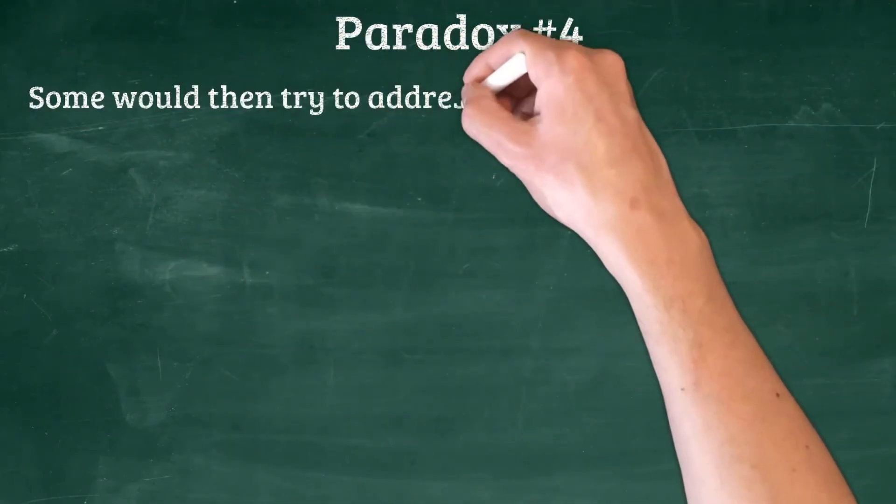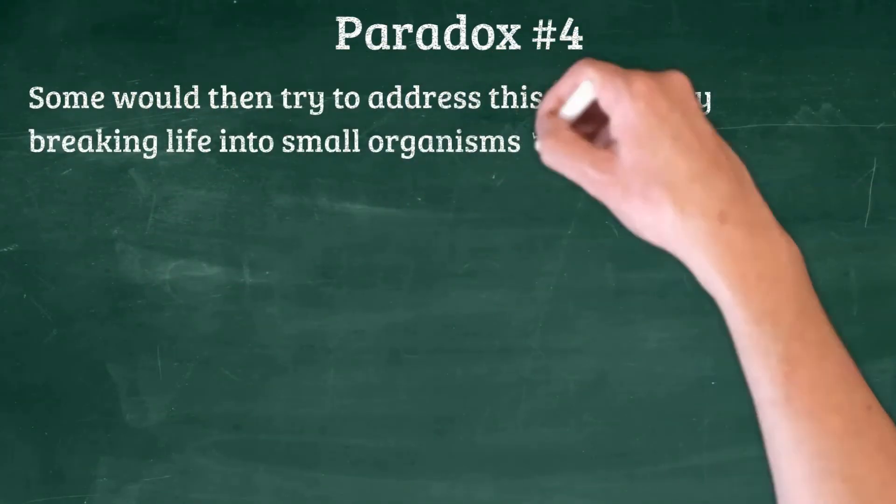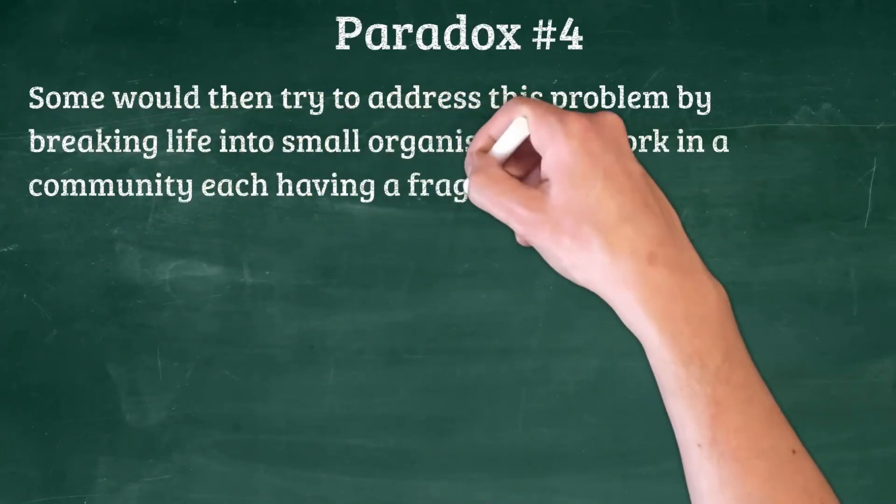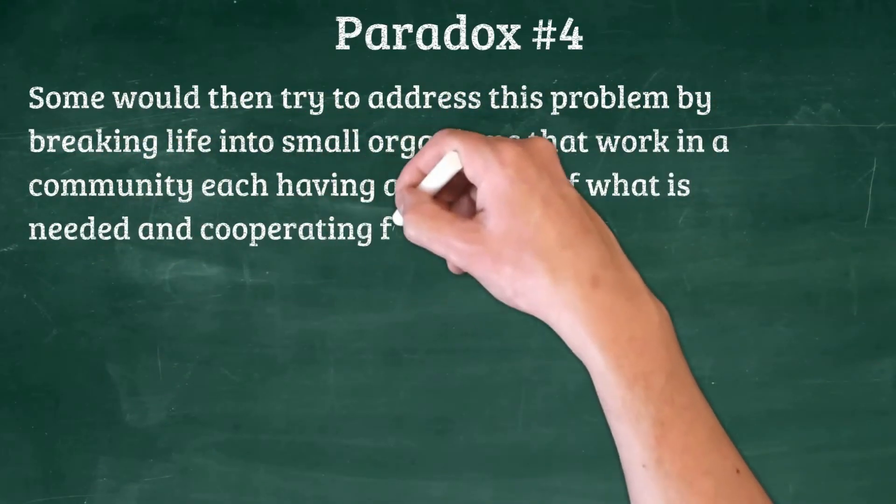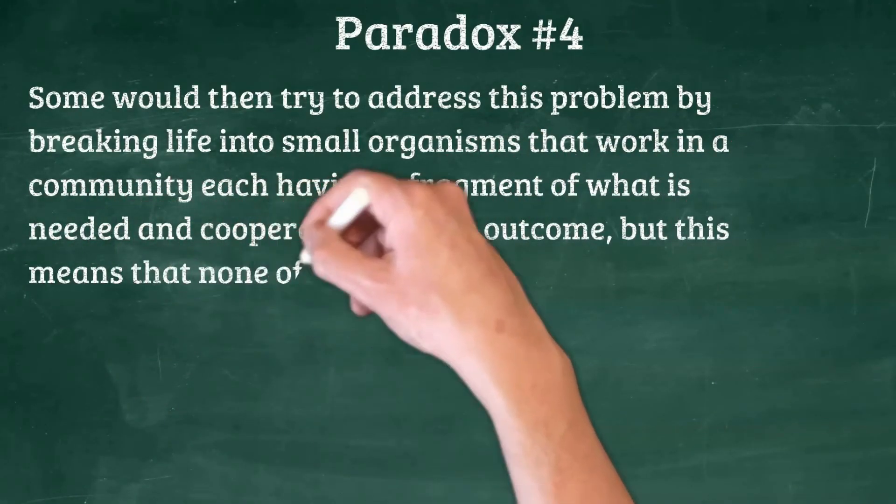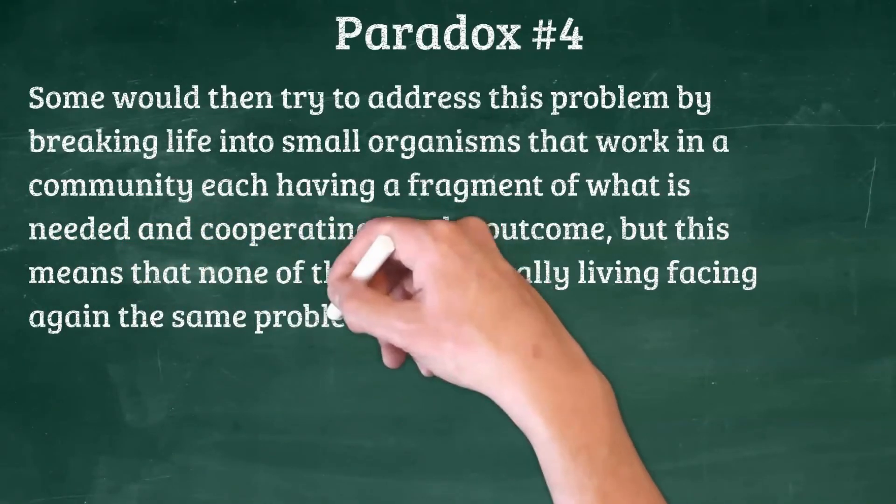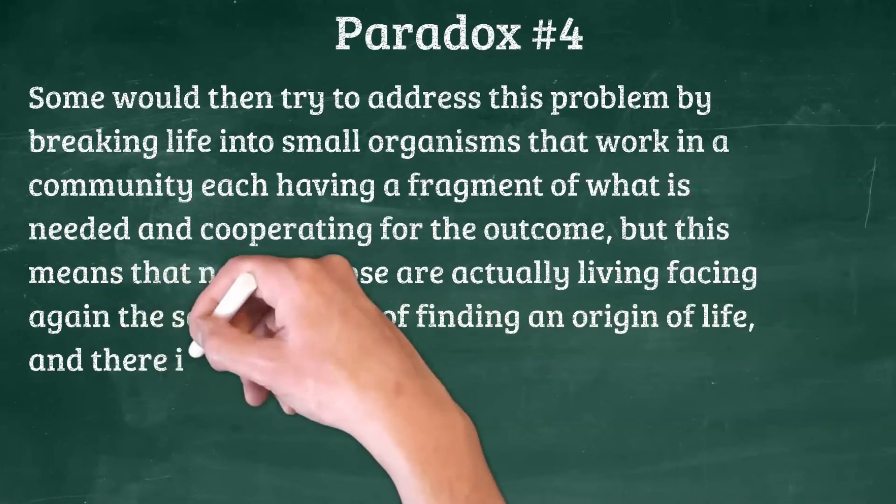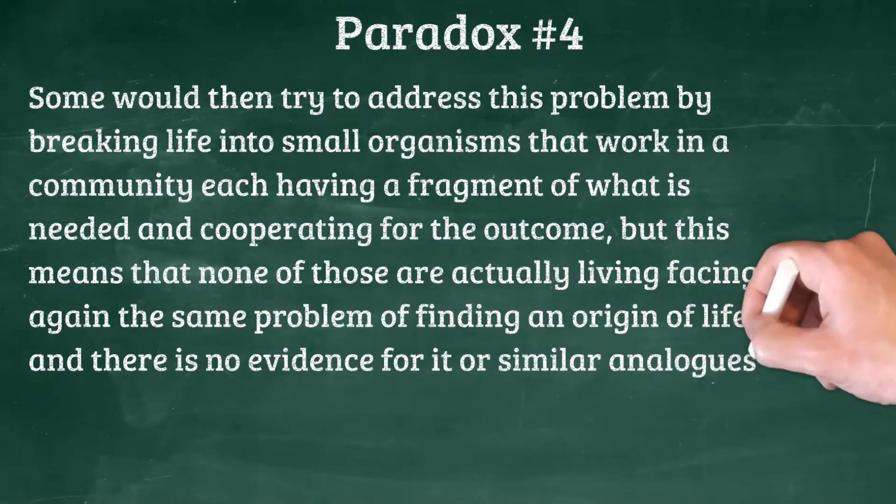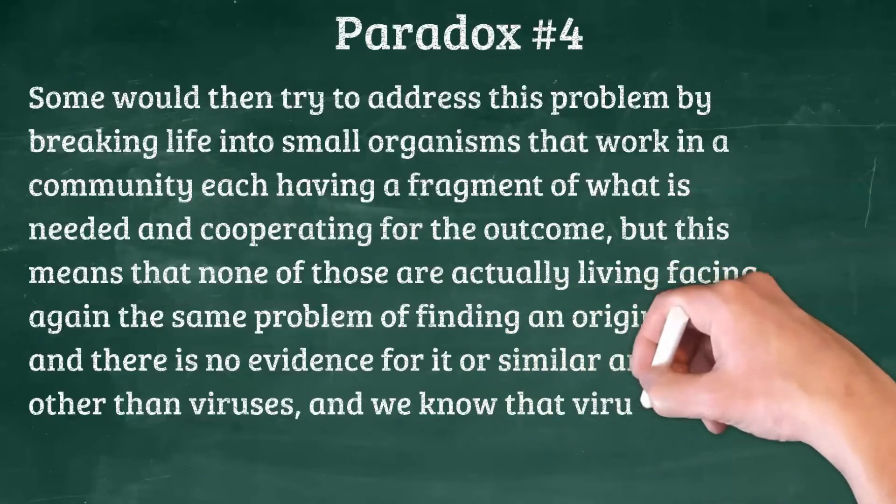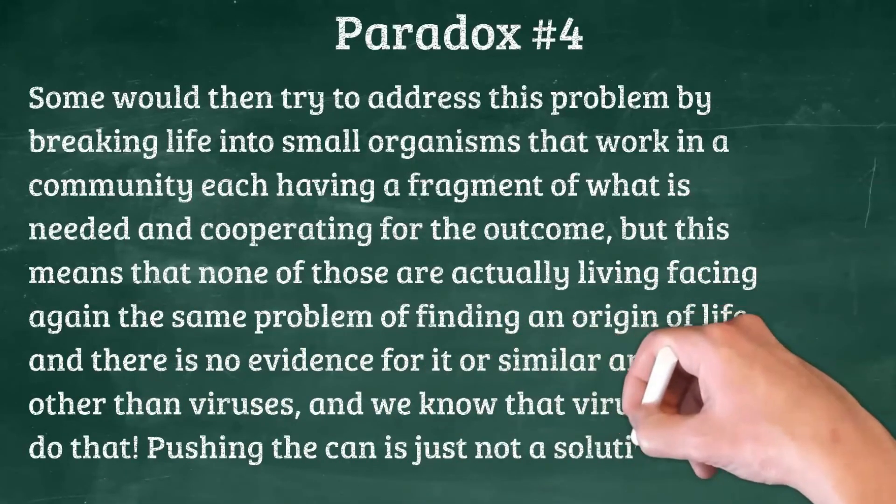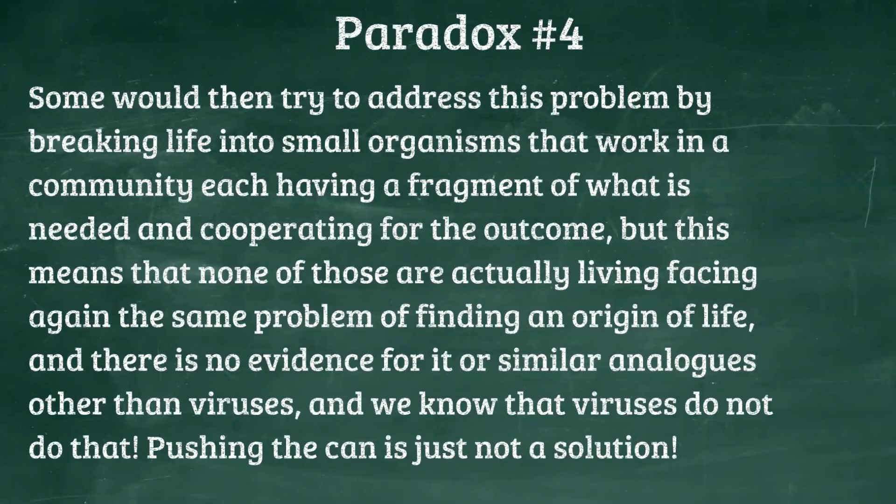And number four: if we try to address the problem by breaking up life even further than the RNA world hypothesis tries, or we try to appeal to cooperativeness between smaller organisms, or to co-evolution. At one point, we still have to reach to the point where there is an independent autonomously living RNA organism. And once we reach it, we are back to the same paradox again, regardless how we reach there. So if we try to break it up, we will end up summing it up. It doesn't solve anything.